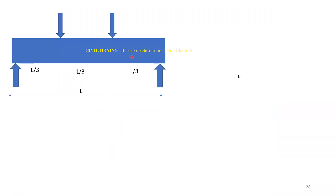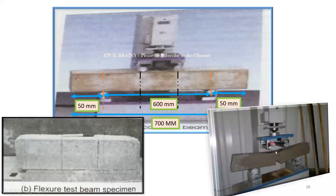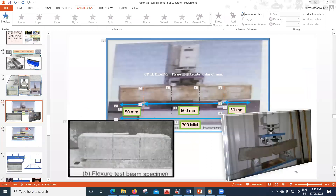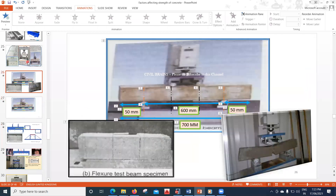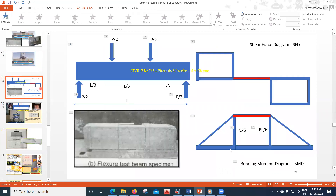To summarize the procedure: you apply the load, get the crack, then find the force at failure. The formula given is σ_b = PL / (bd²), where σ_b is the modulus of rupture, P is the load at failure, L is the effective span, b is the width, and d is the depth of the beam. You apply this formula and get the answer.